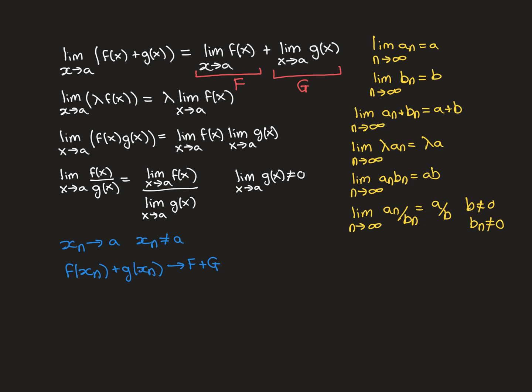Now let's prove the first result. We start with the assumption that the limit as x approaches a of f(x) equals capital F, and the limit as x approaches a of g(x) equals capital G. We want to show the limit as x approaches a of f(x) + g(x) equals F + G. Via sequence characterisation, we take any domain sequence x_n converging to a where terms don't equal a, and need to prove the image sequence f(x_n) + g(x_n) converges to F + G.